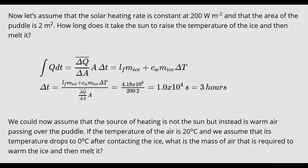Now, we'll specify that the solar heating rate was 200 watts per meter squared, and now we know what the area of the puddle is. So the integral of the heating rate is just the average heating rate times time if the heating rate is constant. And so that gives us a way to figure out how long it would take to melt all the ice.